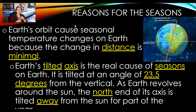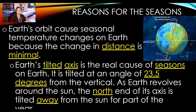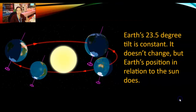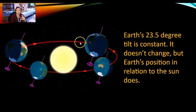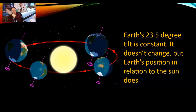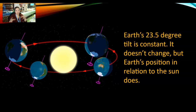As the Earth revolves around the sun, the north end of the axis is always tilted away from the sun for part of the year, and sometimes it's towards the sun. The Earth's 23.5-degree tilt is constant — we're always tilted at that same angle at all times. As we go around, we stay at that tilted angle; it doesn't change position, but we change our distance from the sun and the sun hits at different angles.